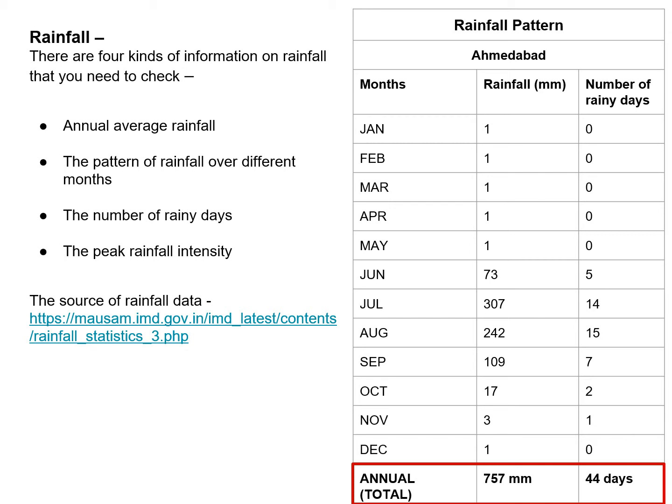Third is the number of rainy days, which determines whether it is better to store rainwater or to recharge it. The last one is peak rainfall intensity. The size of the storage or recharge structure is calculated based on the amount of water needed to be stored or recharged during the most intense spell of rain, which can range from 15 to 30 minutes. Recharge structures must be designed to deliver peak intensity rainfall to the aquifer or storage temporarily during such intense spells.